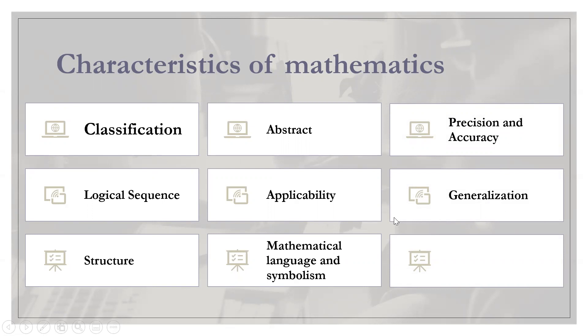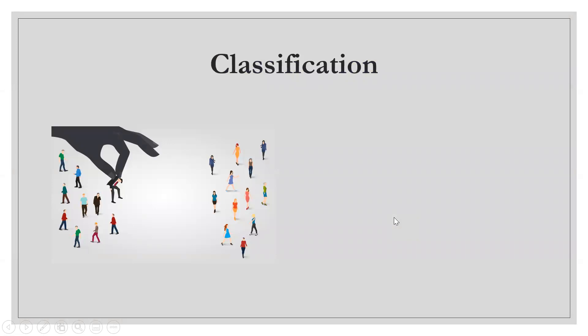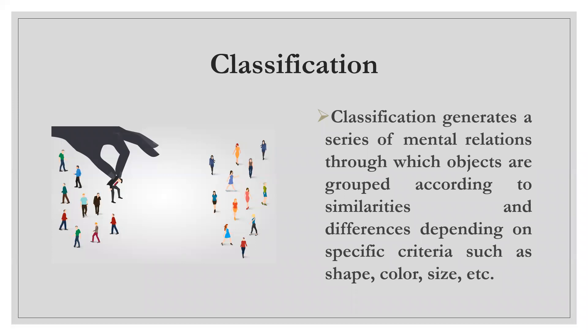Let's discuss this one by one. Classification generates a series of mental relations through which objects are grouped according to similarities and differences depending on specific criteria such as shape, color, size, etc.